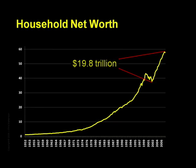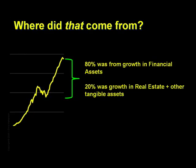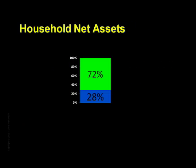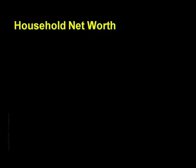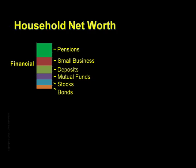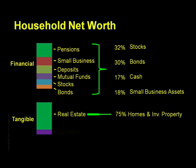Where did that $19.8 trillion in new wealth come from? About 80% of that growth came from a rise in financial assets, and the remaining 20% came from growth in real estate and other tangible assets. When we look at how much of each type there was, we see that 72% of the total net worth consists of financial assets totaling about $41 trillion, while tangible assets are the remaining 28% and total around $16 trillion. The $41 trillion in financial assets consists of things like pension funds, assets of privately held businesses, deposits, stocks, and bonds — roughly four main classes: stocks, bonds, cash or deposits, and the assets of privately held businesses. The other bucket of $16 trillion in tangible assets consists primarily of real estate, which is 75% of this bucket, and consumer durables — your car, your dryer, and your snowblower, if you happen to have one.